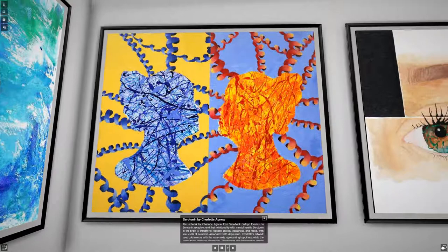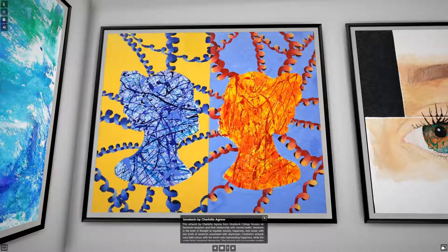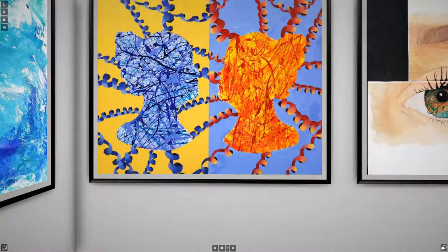This artwork by Charlotte Agnew from Viewbank College focuses on serotonin receptors and their relationship with mental health. Serotonin in the brain is thought to regulate anxiety, happiness and mood, with low levels of serotonin associated with depression. Charlotte's artwork uses bold colors with the warm reds representing happiness, while the cooler blues represent depression. The artwork also incorporates protein alpha helices to highlight the importance of serotonin receptors in modulating these moods.